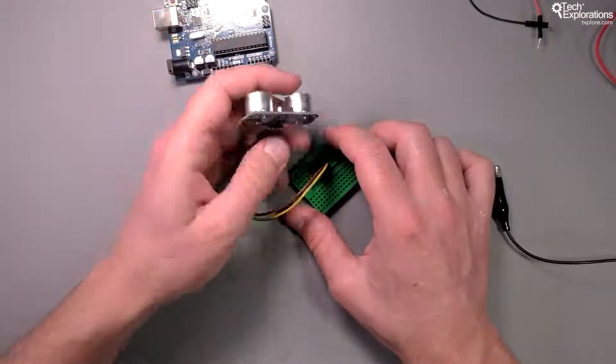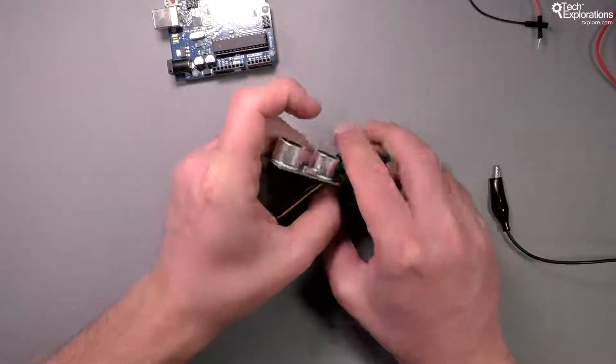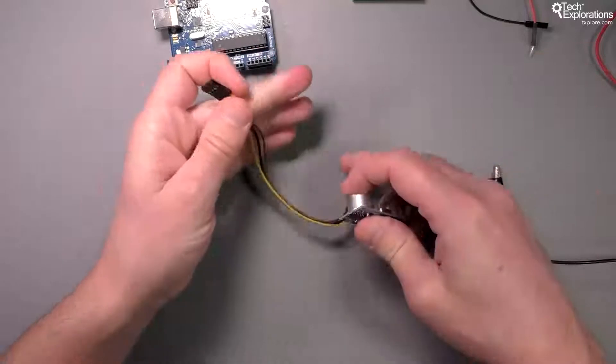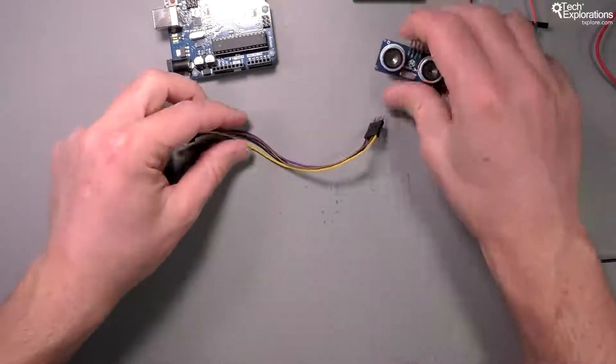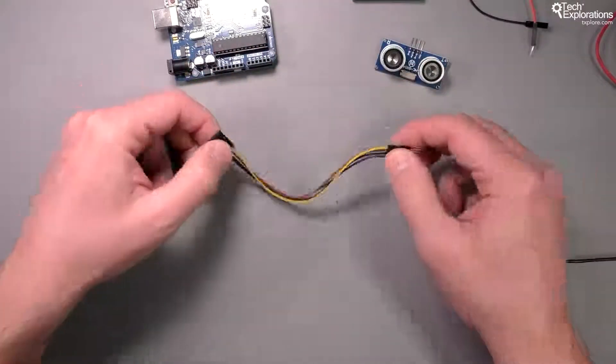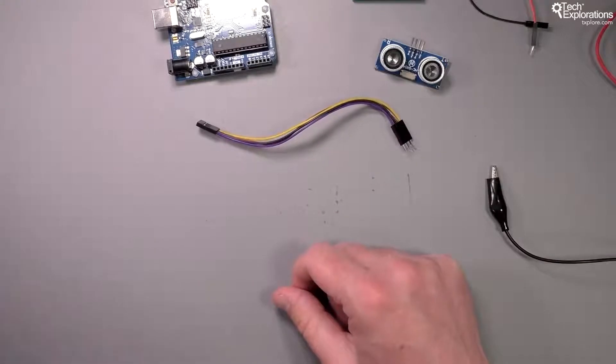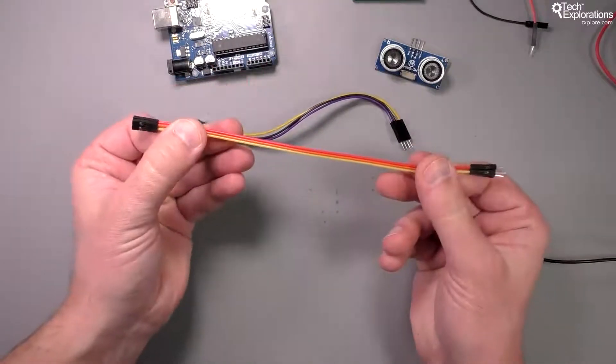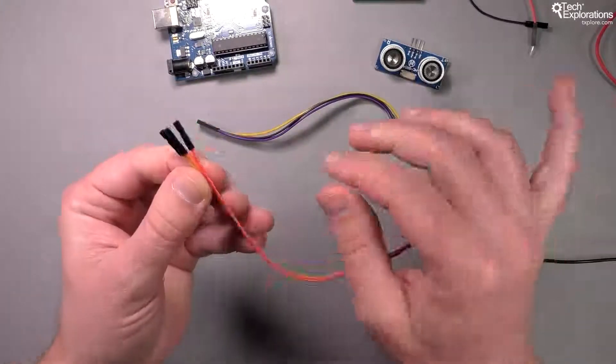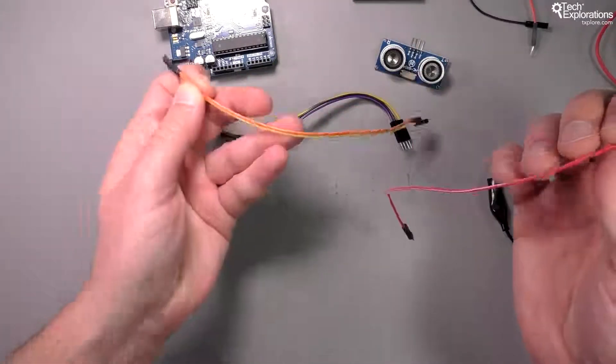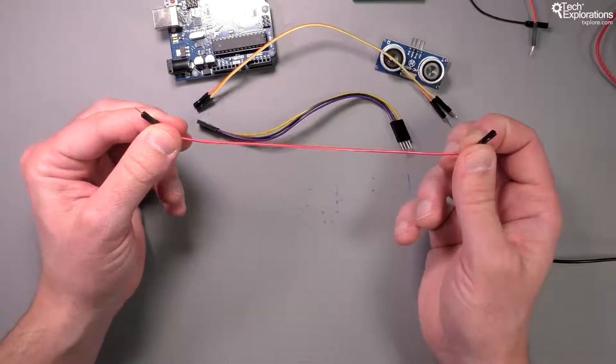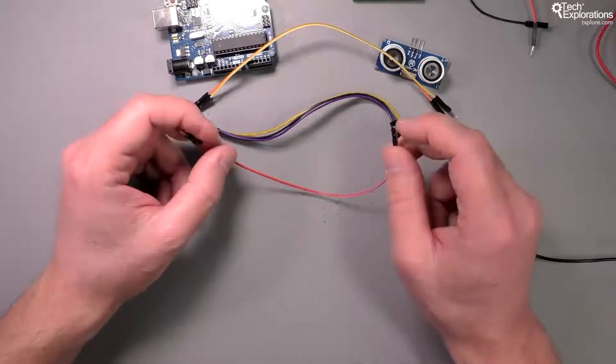Of course, female to male jumper wires come in individual pieces instead of like this bundle or four-wire piece. Usually they come in bunches, and then as you need an individual jumper wire, you just remove it from the bunch and then it becomes independent and you can use it in your project.